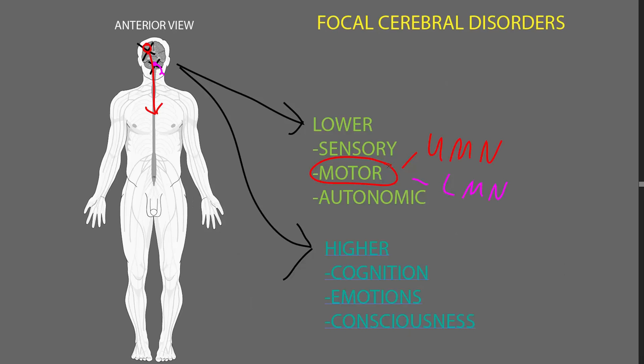A focal abnormality of the cerebrum often causes sensory or upper motor neuron abnormalities of the contralateral side — the other side — because many of these pathways cross from one side to the other in the central nervous system. In particular, the upper motor neurons: almost all of them cross from one side to the other.